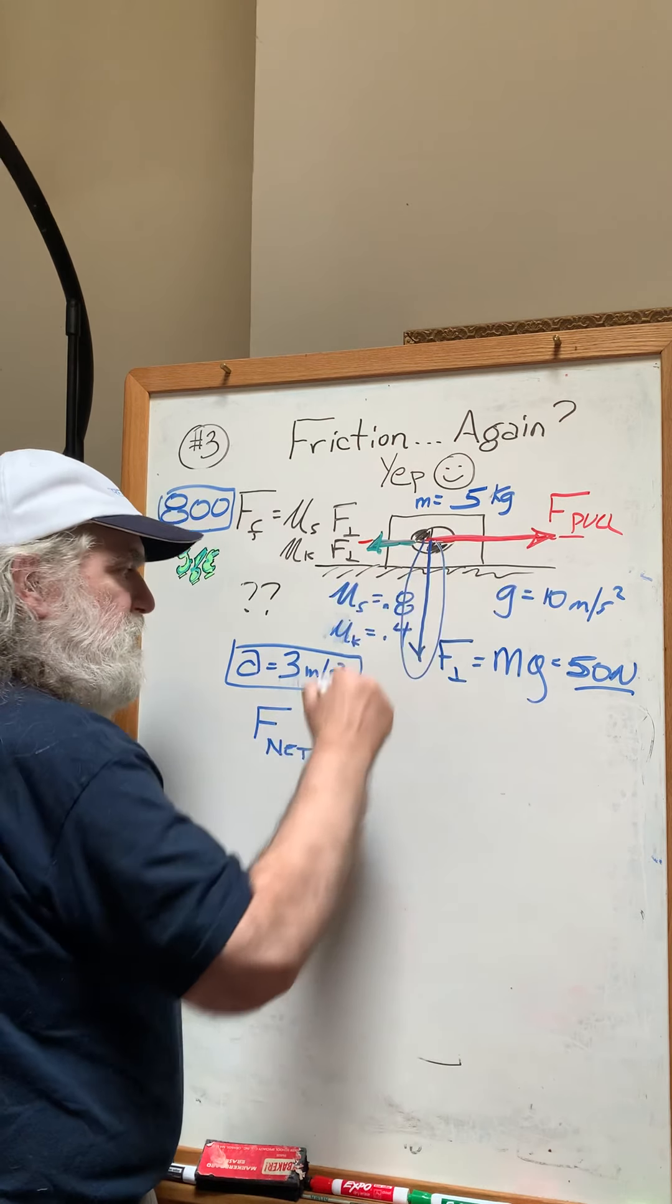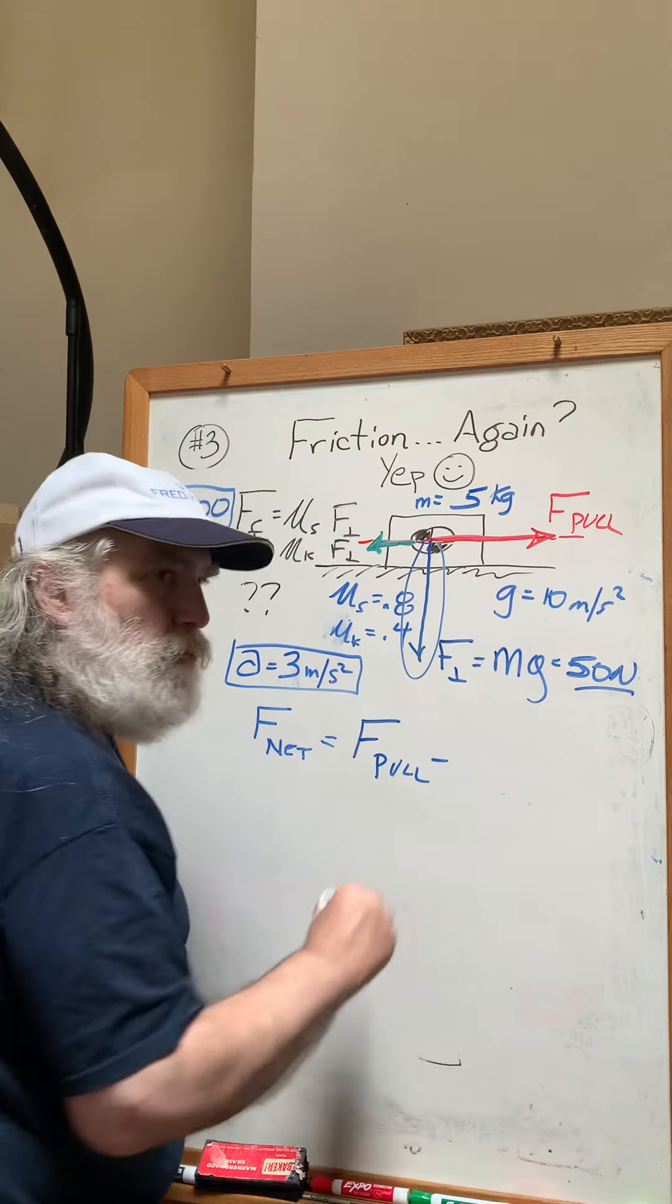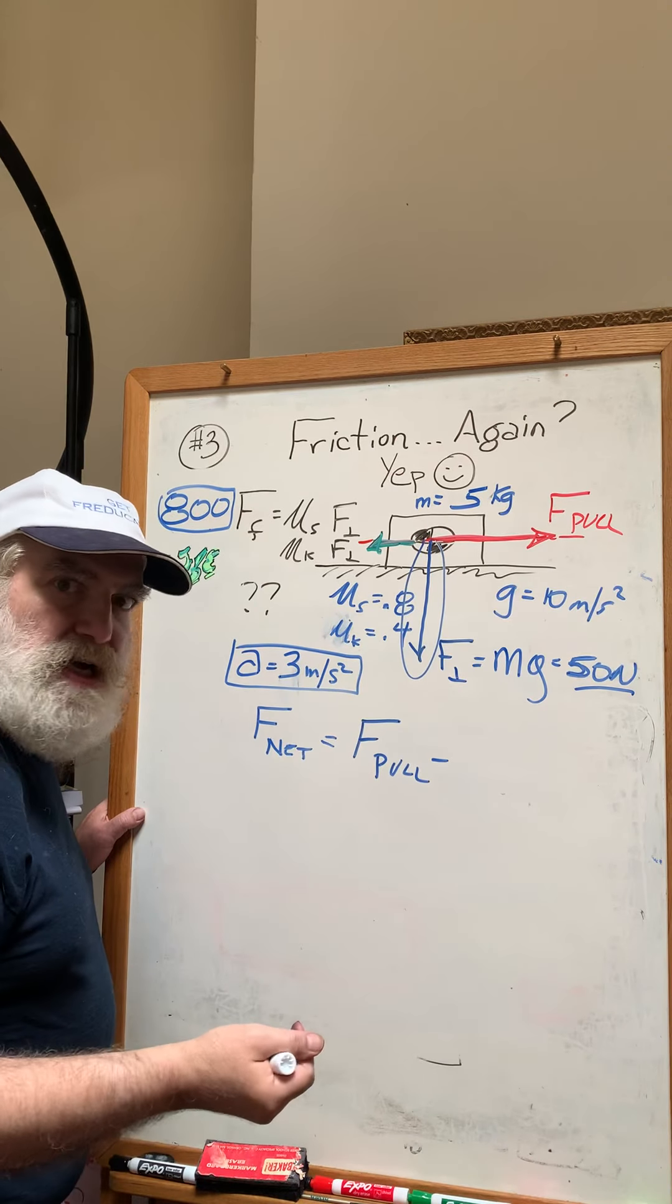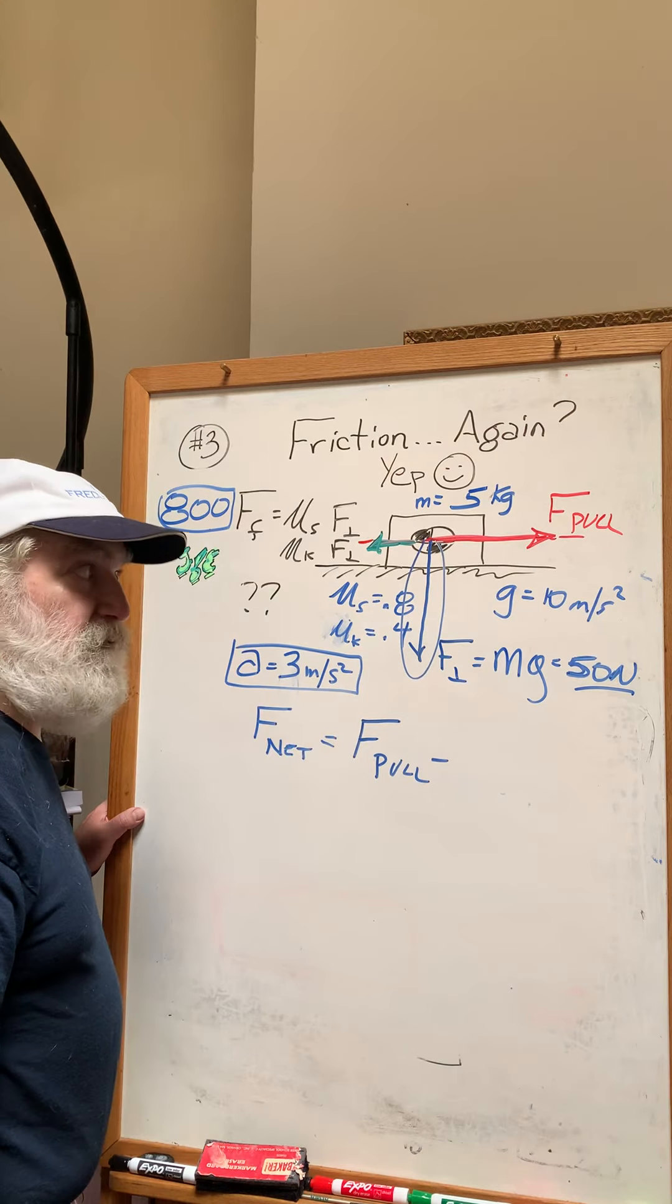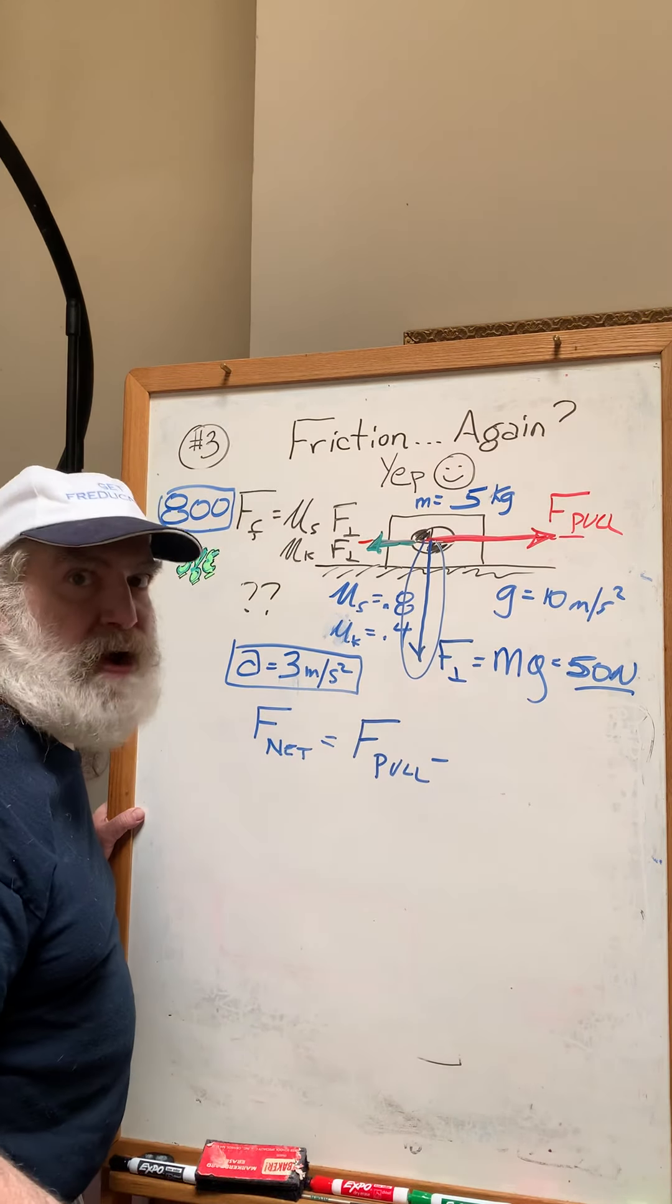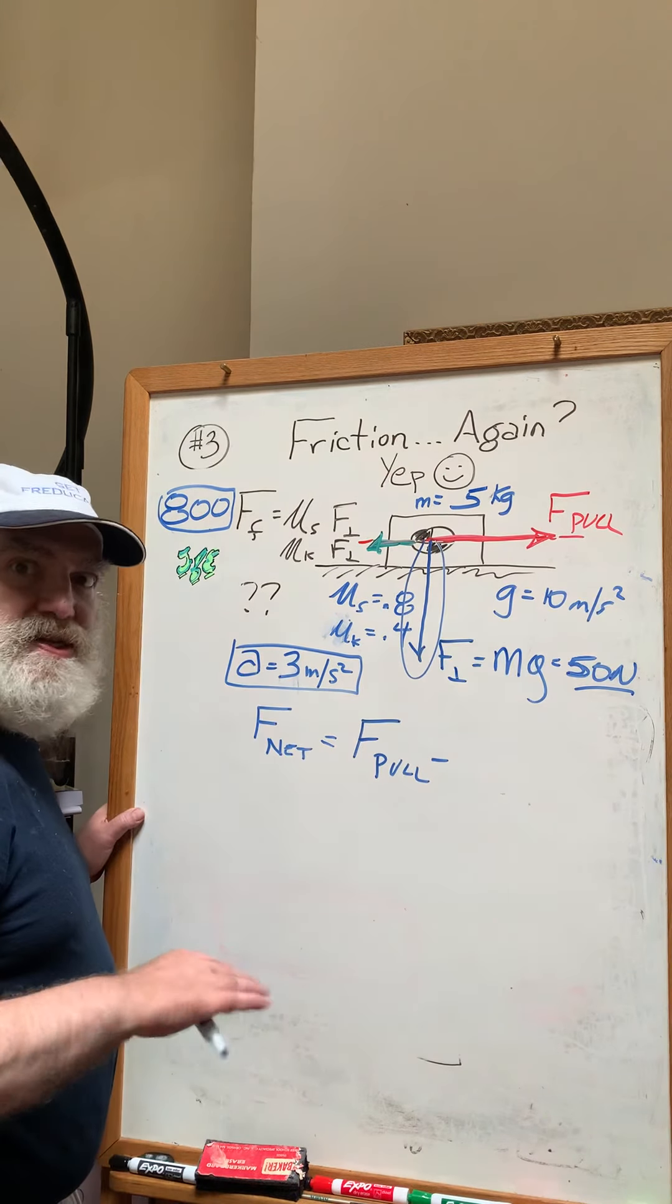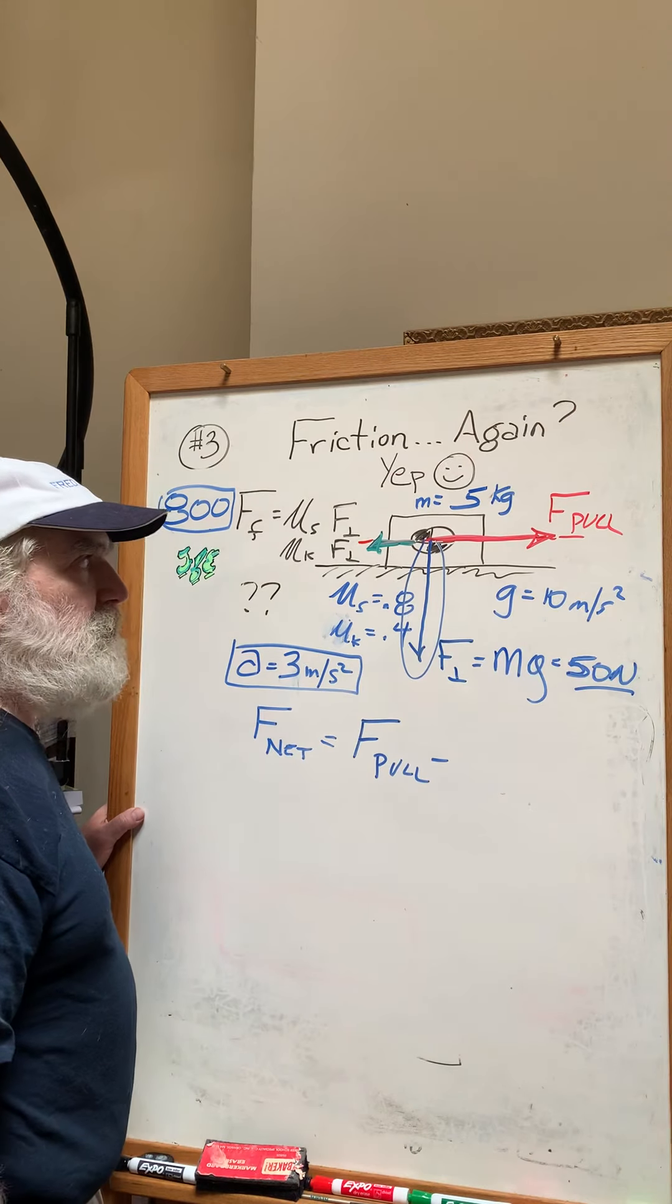The force net is F pull minus F friction. How do I know F pull is bigger? Because you don't walk up to something and tug on it and the box moves away from you. A cat might or a dog if you leash it up might run away from you, but if it doesn't have any ATP to generate muscle action or it's not a robot, when you pull on a static object it will not pull back.